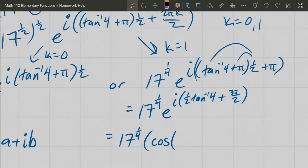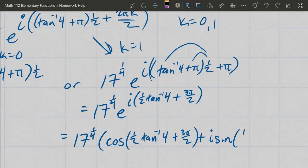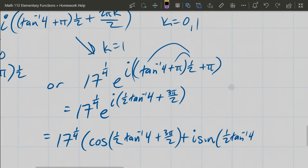So it's going to be cosine of this angle up top plus i sine of that same angle.